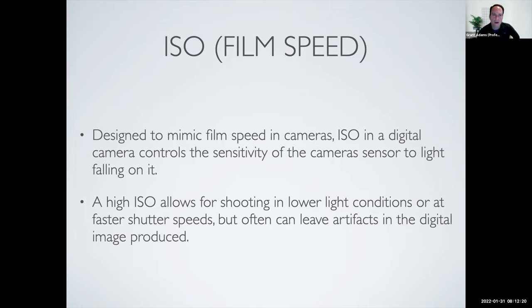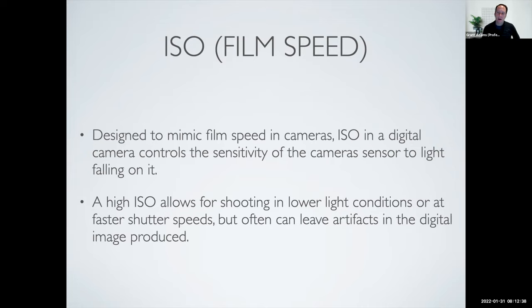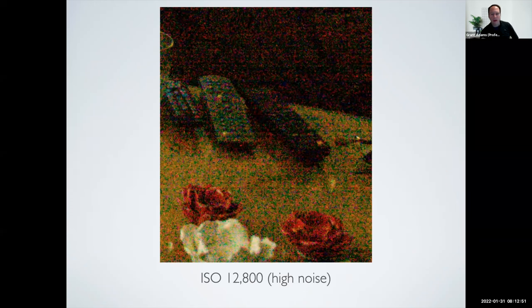ISO in the digital world is essentially doing the same thing — allowing us to control how sensitive the sensor inside your camera is to light. Why is this important? We can shoot in much lower light conditions when we use a higher ISO, making the sensor more sensitive so we can still get a nicely exposed image. The problem is that when we do this, especially with a lower quality camera, we end up with images with a lot of noise — all those little pixels that aren't really good.